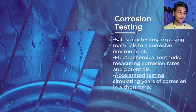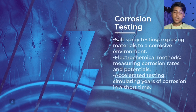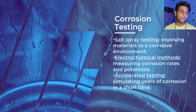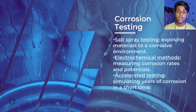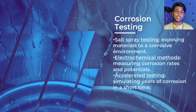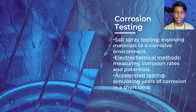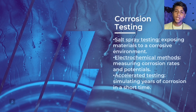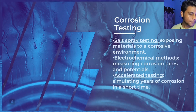Corrosion testing: I have noted three points. First, salt spray testing — exposing materials to a corrosive environment. Second, electrochemical methods — measuring corrosion rates and potential, checking how fast or how densely corrosion can occur. Third, accelerated testing — simulating years of corrosion in a short time by applying extra temperature, extra water, and extra oxygen, using the causes of corrosion to accelerate the rate and period of corrosion for testing purposes.